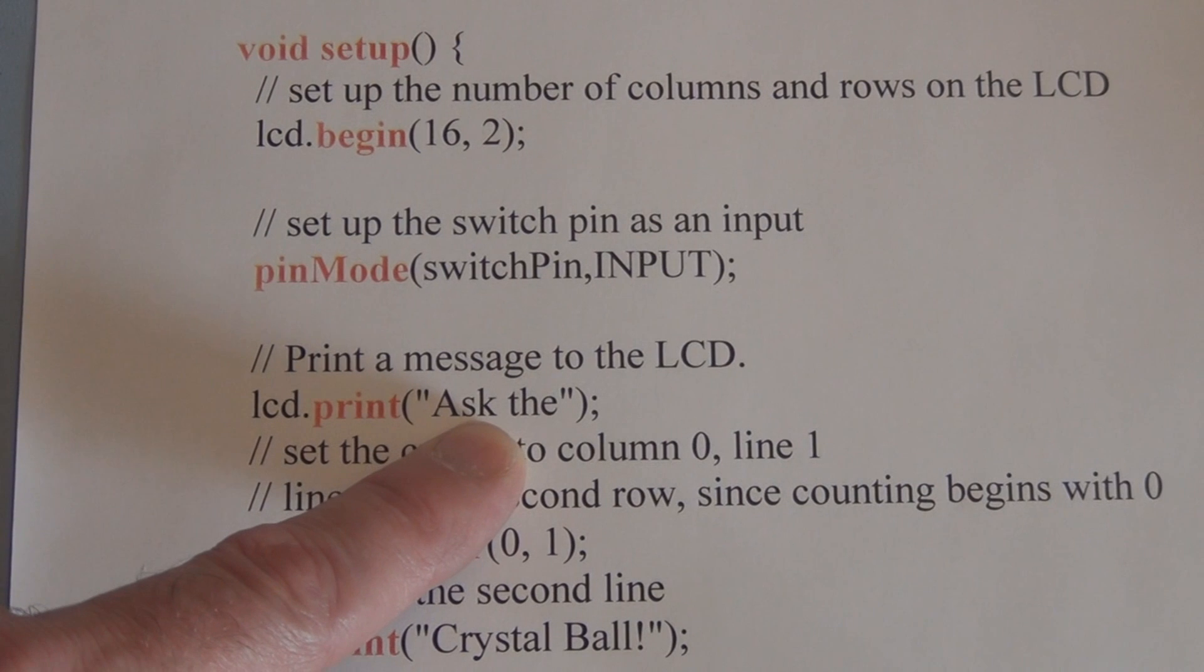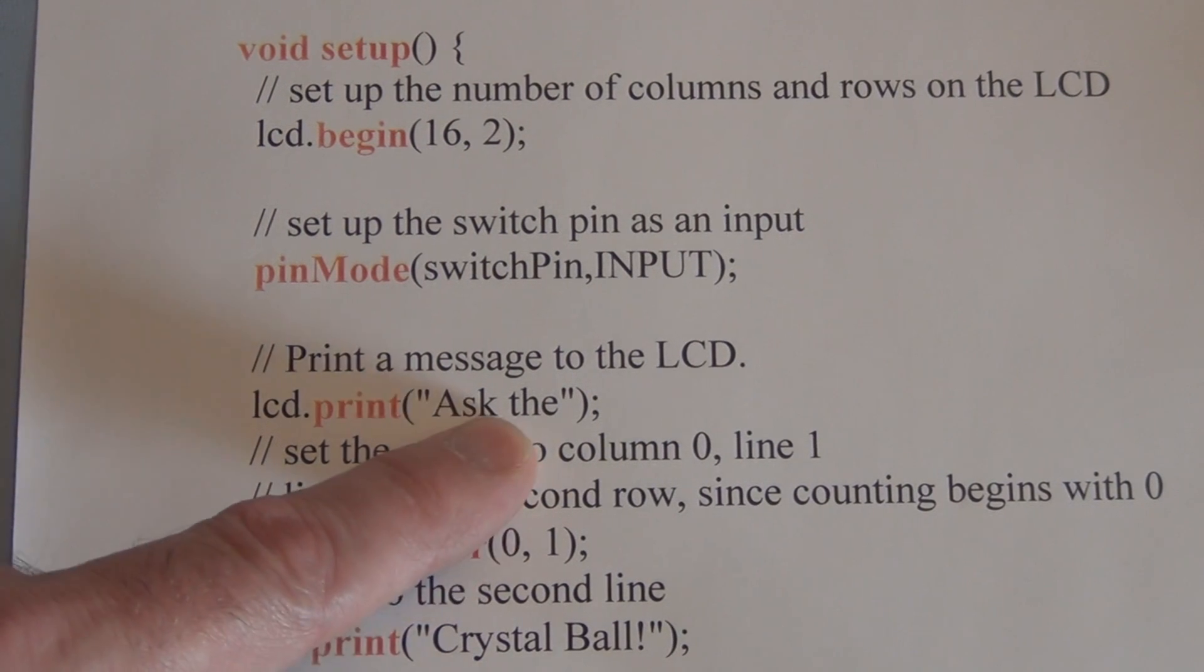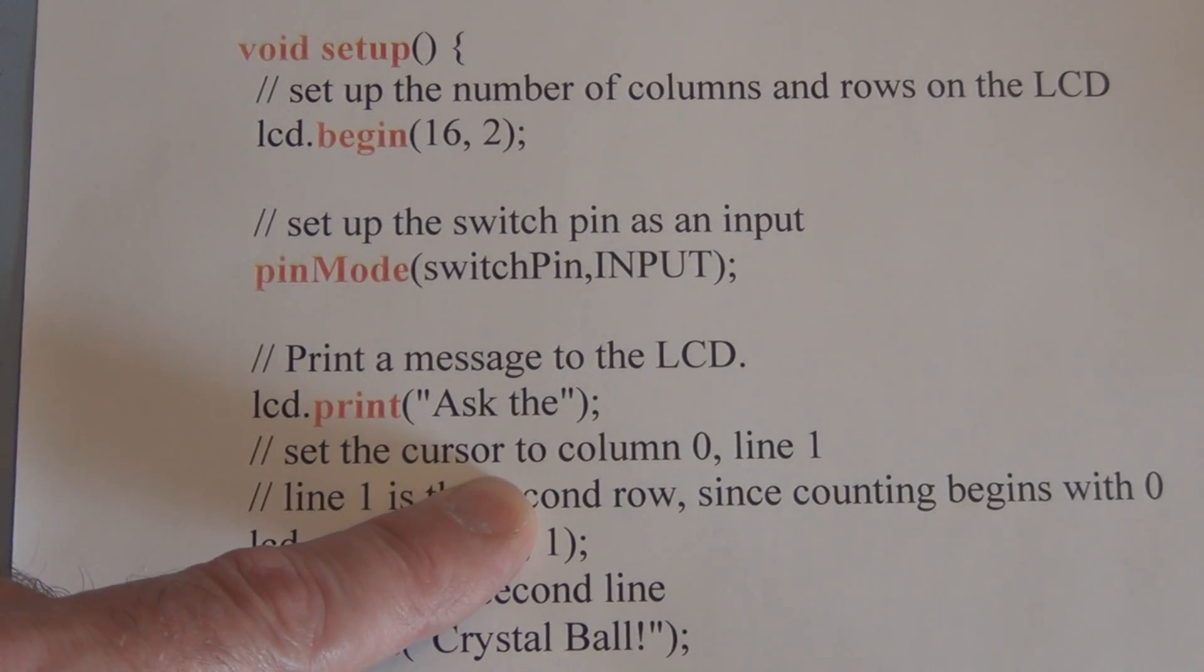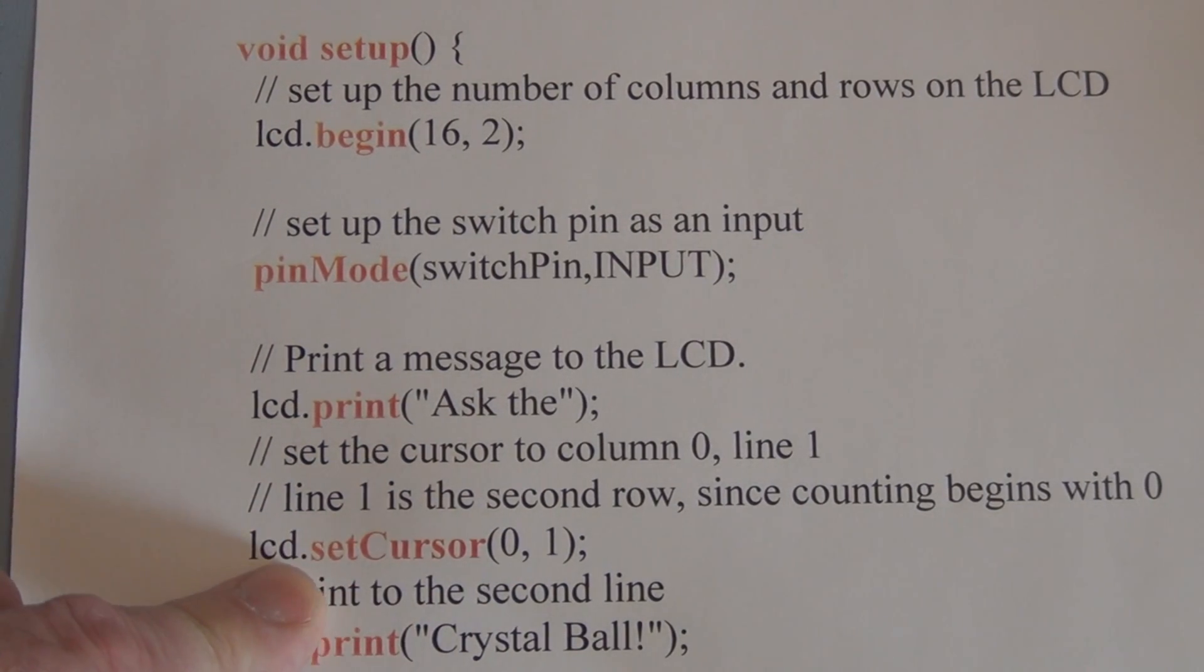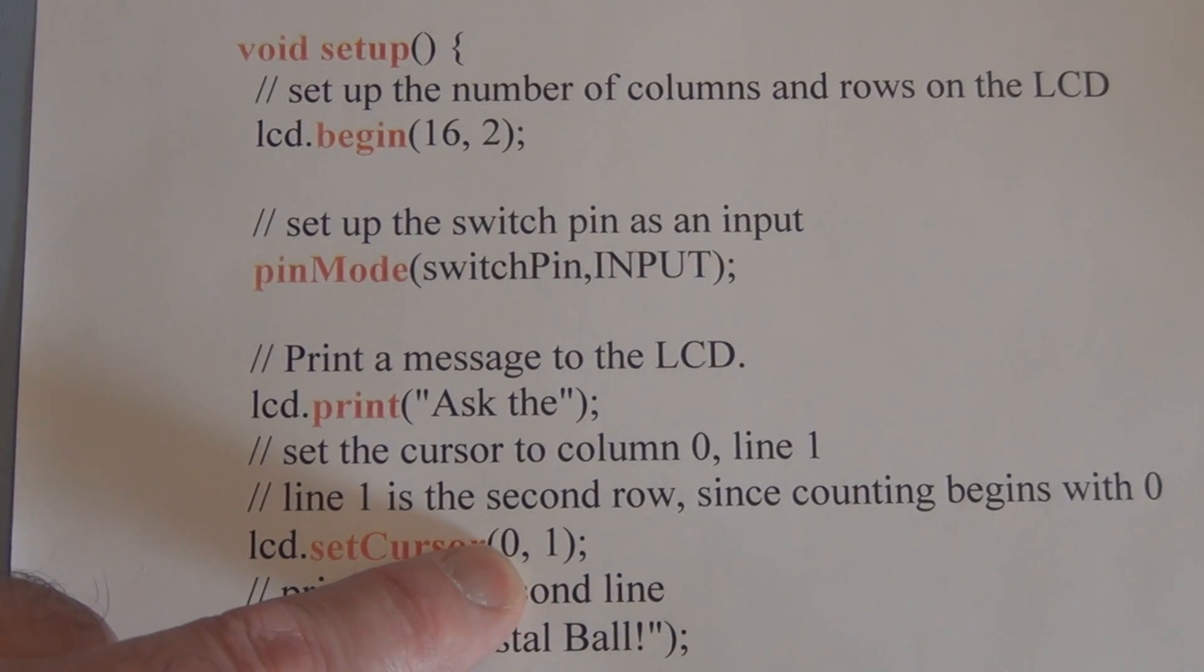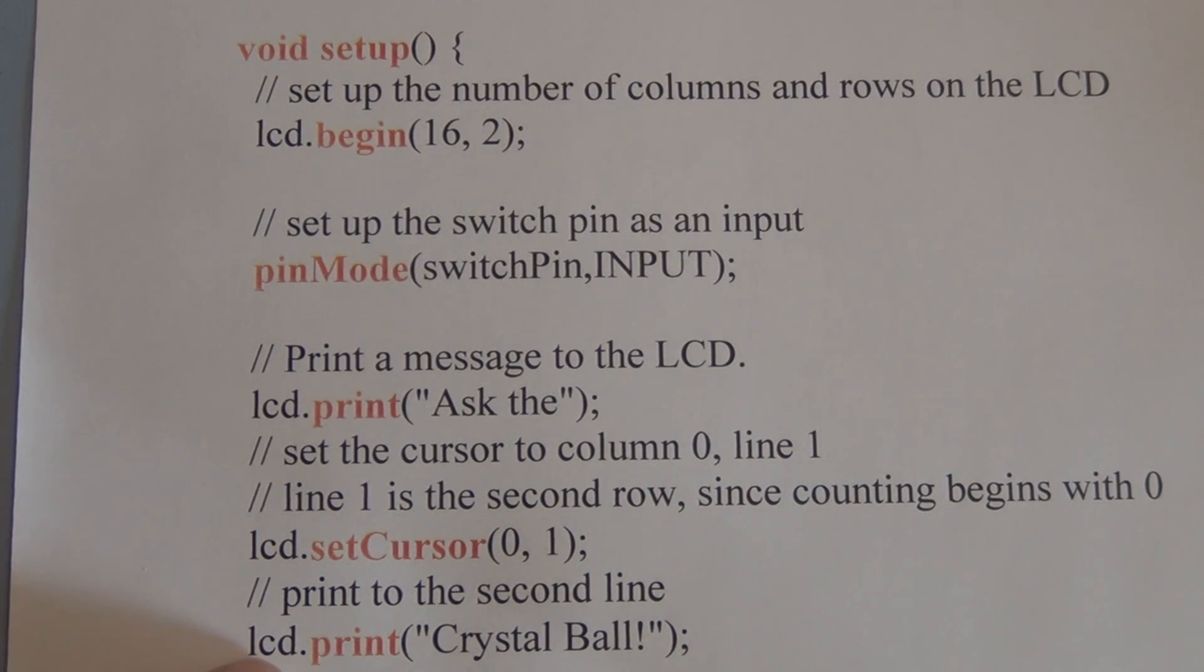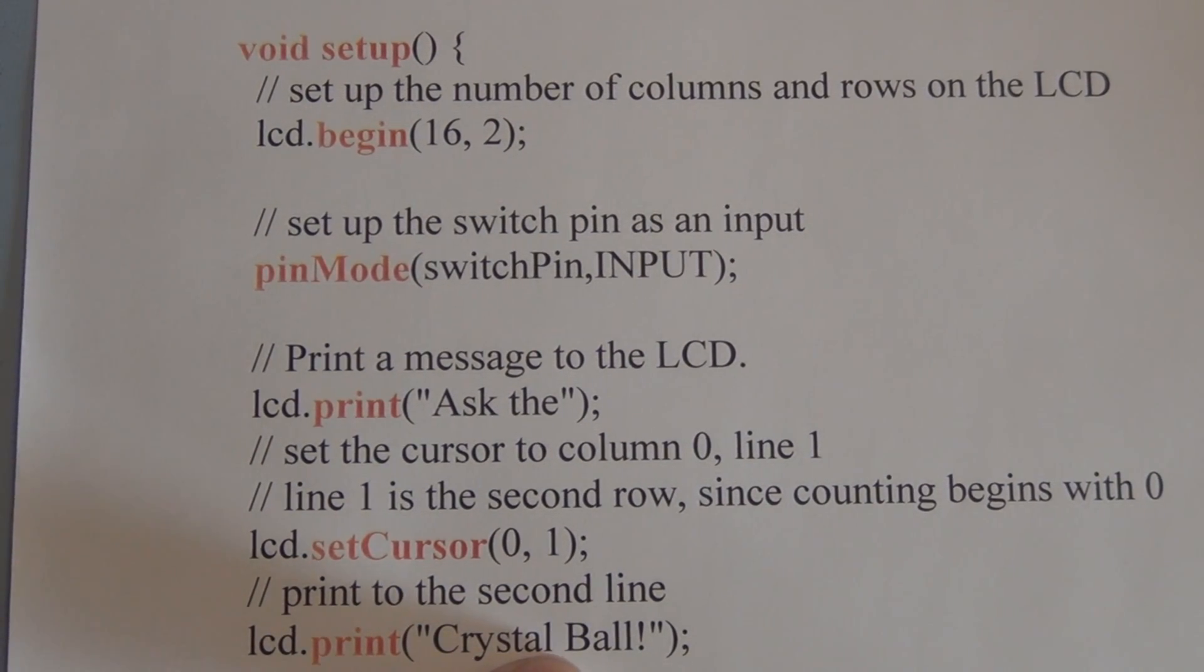If you recall, the LCD display is zero indexed. So the first column and the first row starts off at zero, zero. That's automatic. But then we have to tell it to go to the second row first column. So we have to say lcd.setCursor with the arguments zero and one. So that's still the first column. Although that's one, that's the second row because we're zero indexed. And then we print lcd.print crystal ball on the second line.